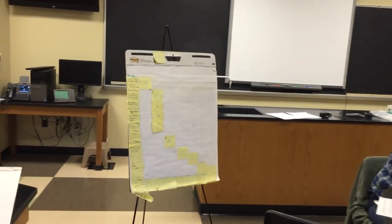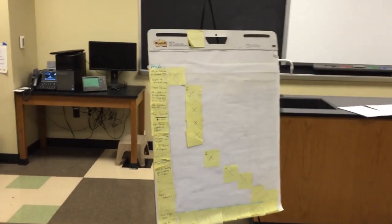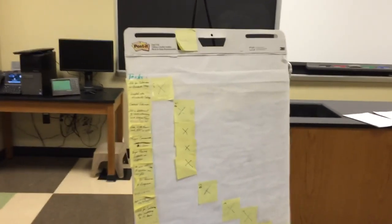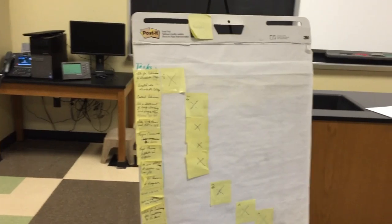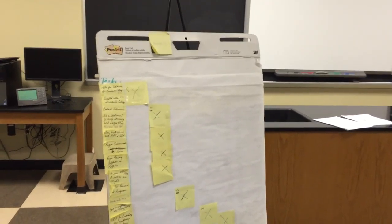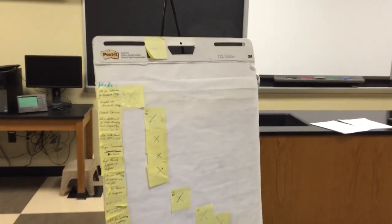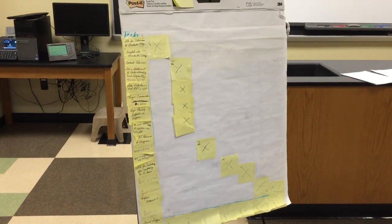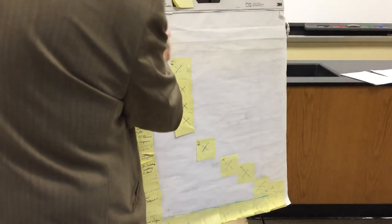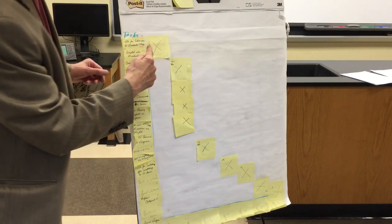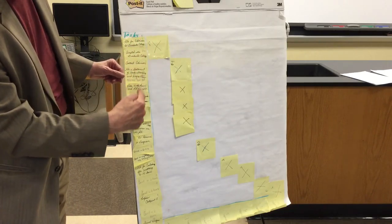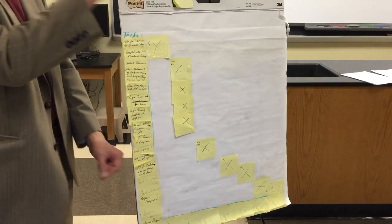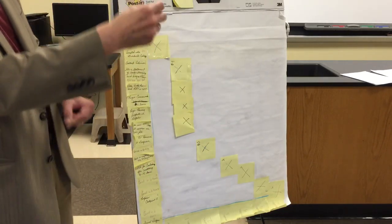This was a hands-on activity. So this was a group version of that Gantt chart. And here they are — down this left-hand column they did all the steps on Post-its, and they argued about it and shifted them around.